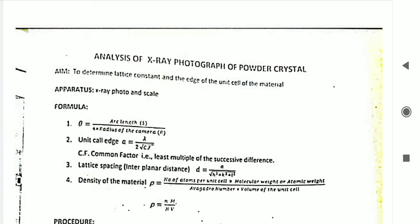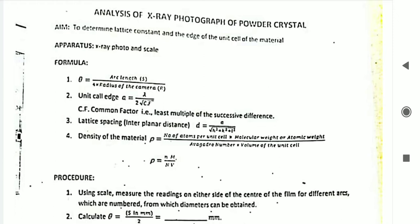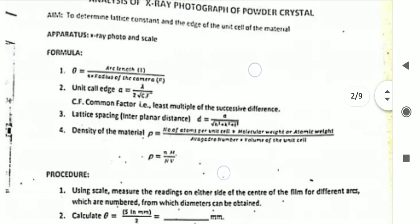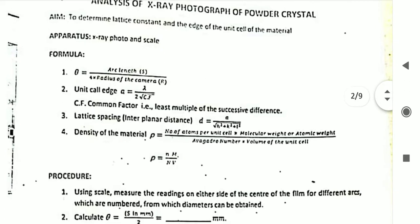The formulas are as follows. First, theta can be given directly or as arc length divided by the radius of the camera — the second method is used here. Second, unit cell edge small 'a' is equal to lambda wavelength divided by 2, divided by the square root of CF, where CF stands for the common factor or least multiple of the successive differences. Third, lattice spacing or interplanar distance small 'd' equals 'a' divided by the square root of h² + k² + l². Fourth, density rho equals number of atoms per unit cell times molecular weight divided by Avogadro's number times volume of the unit cell: rho = Nm / (N × V).